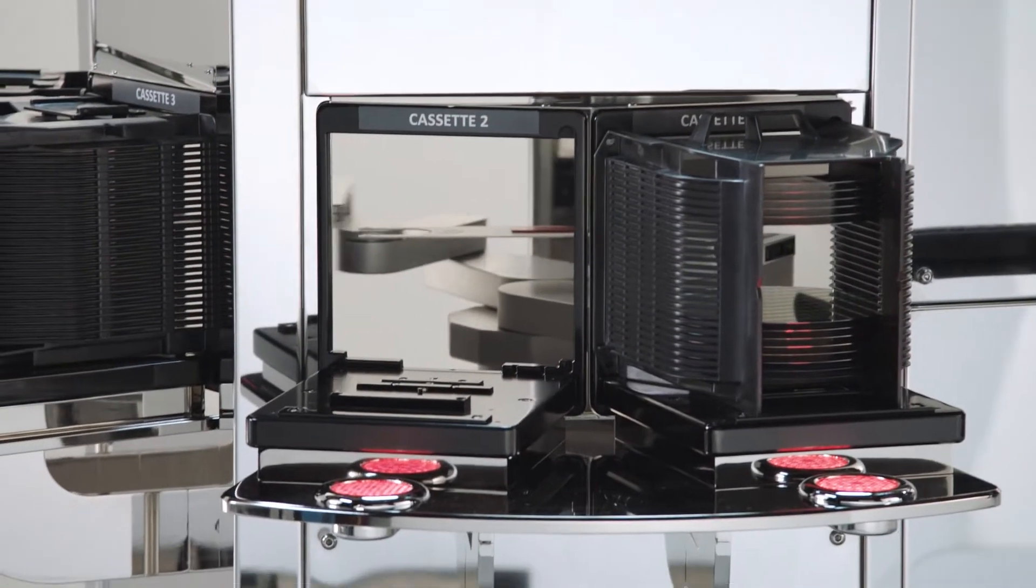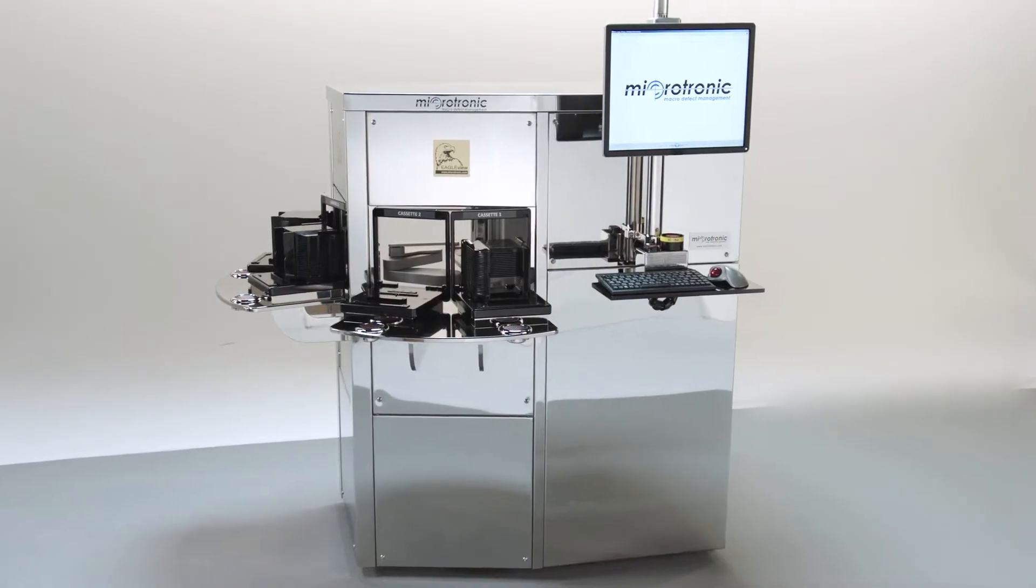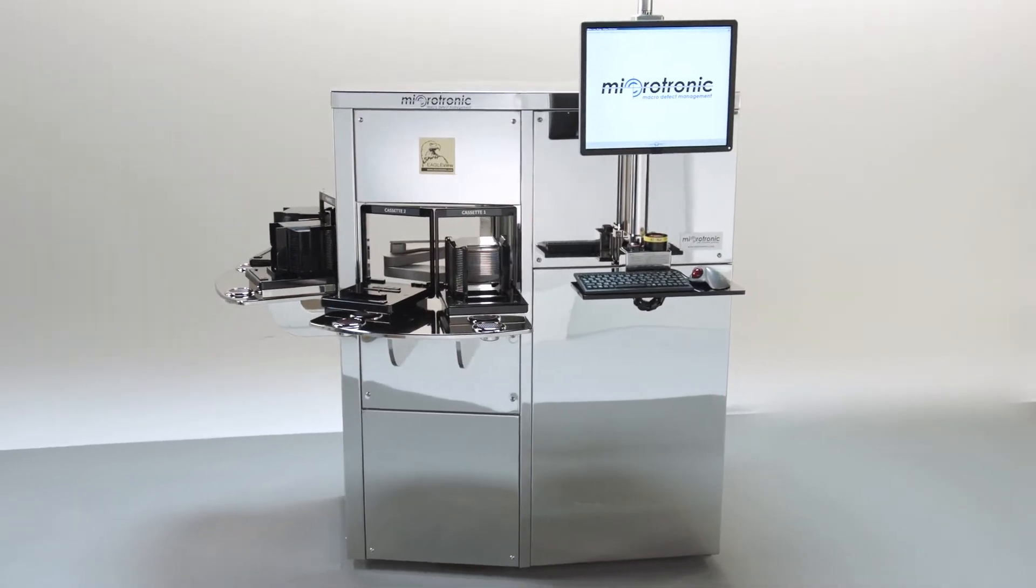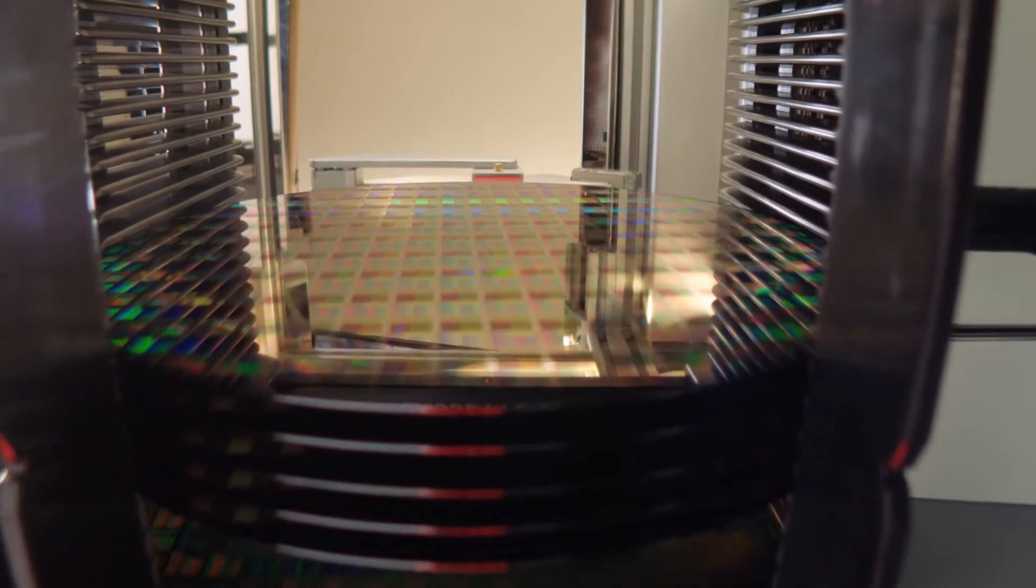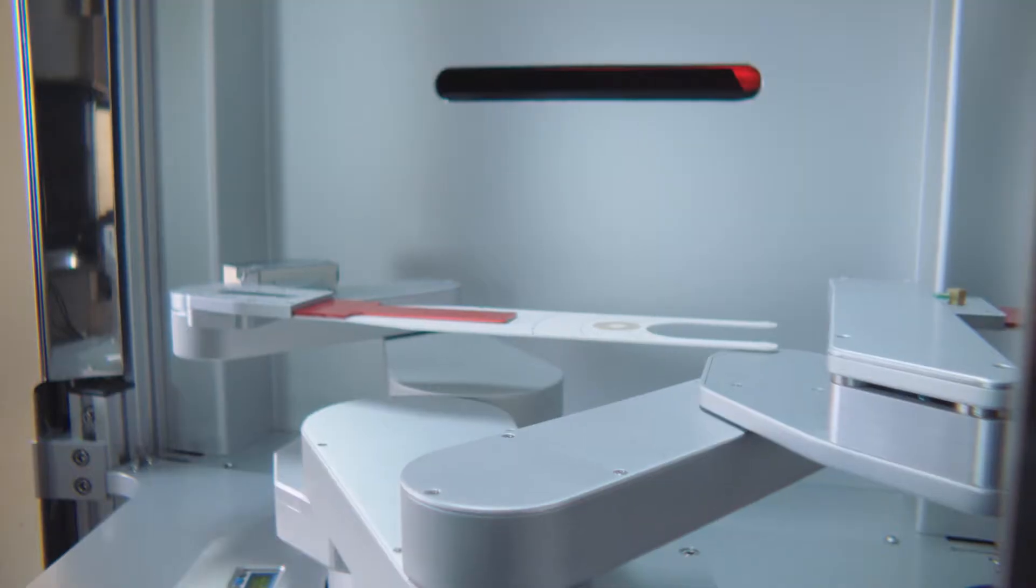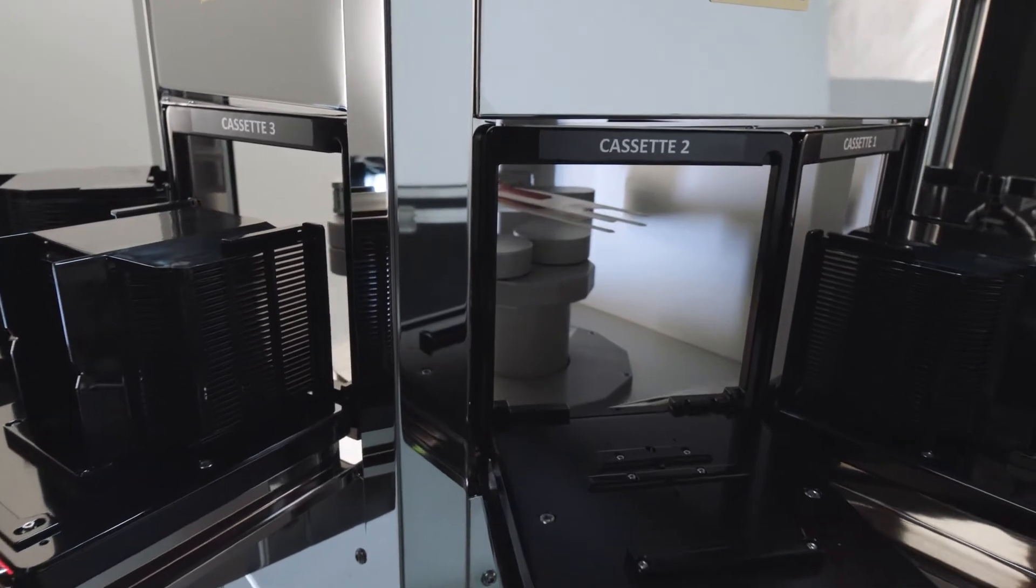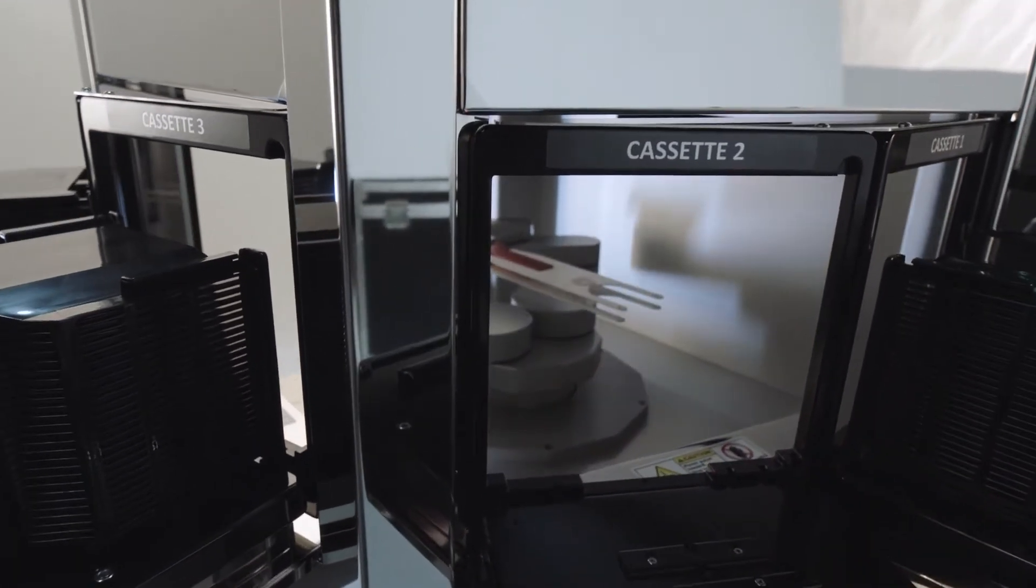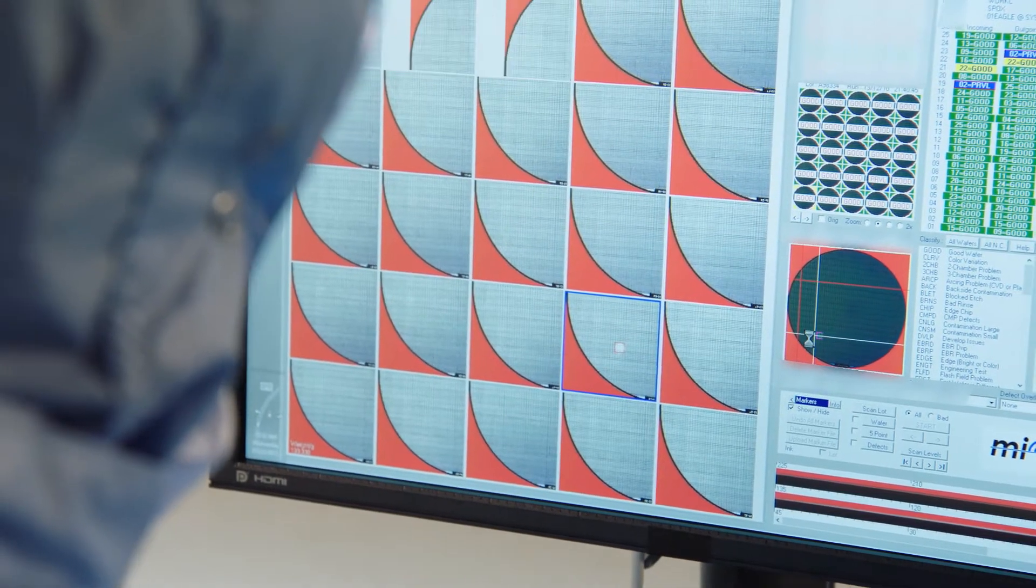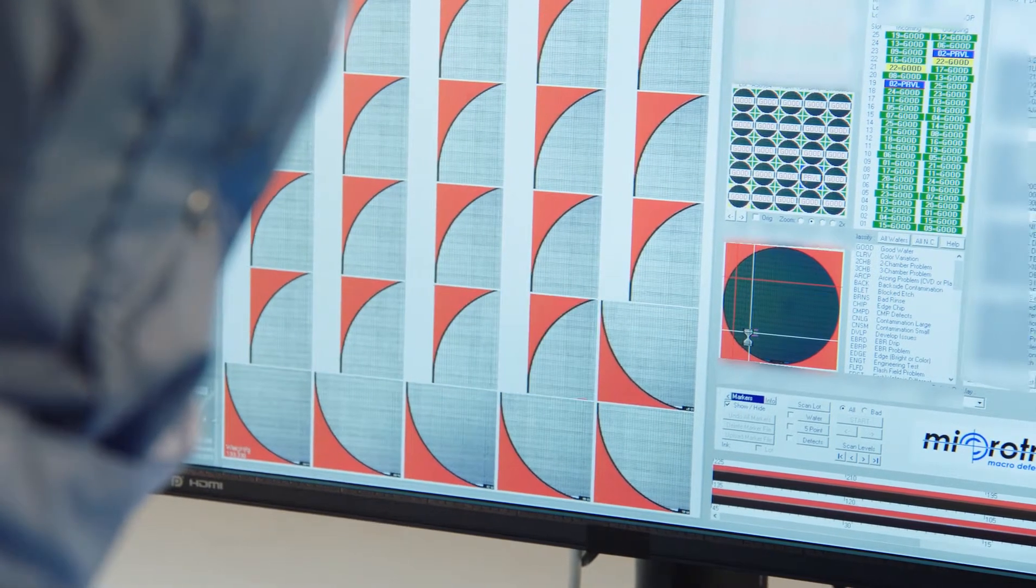Microtronic EagleView is a fully automated macro defect inspection tool that inspects 100% of a FAB's wafers without the need for recipes. EagleView automatically detects macro defects and wafer edge chips at a rate of over 3,000 wafers per day by creating high-resolution images of each wafer and comparing them for defects.